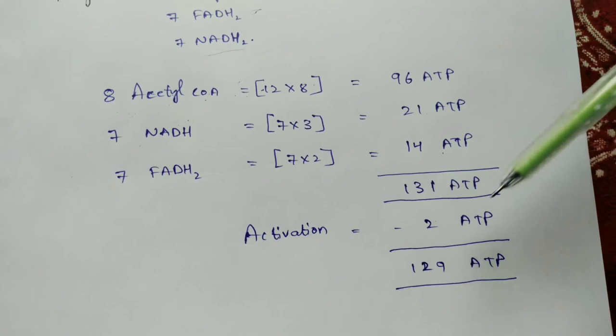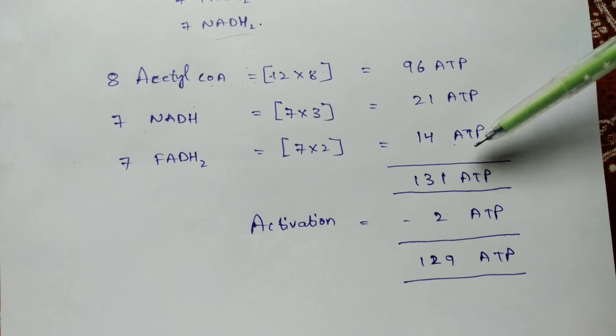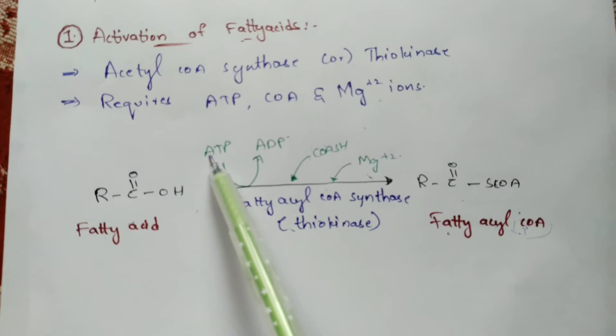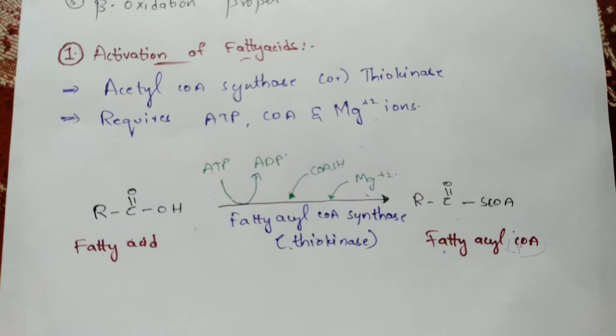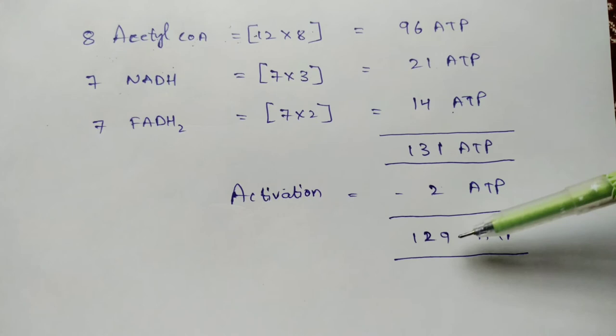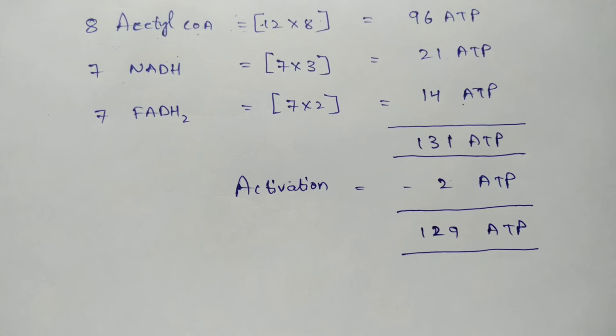From the total of 131 ATP molecules, two ATP molecules are subtracted because they were used in the activation process of the fatty acid. Therefore, the net total ATP generated from the complete oxidation of palmitic acid is 129 ATP molecules.